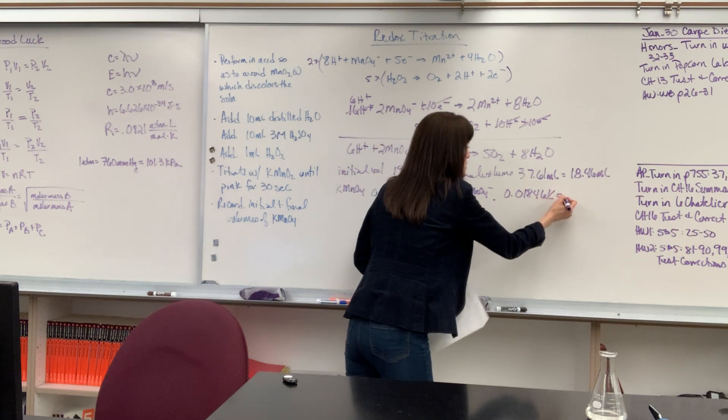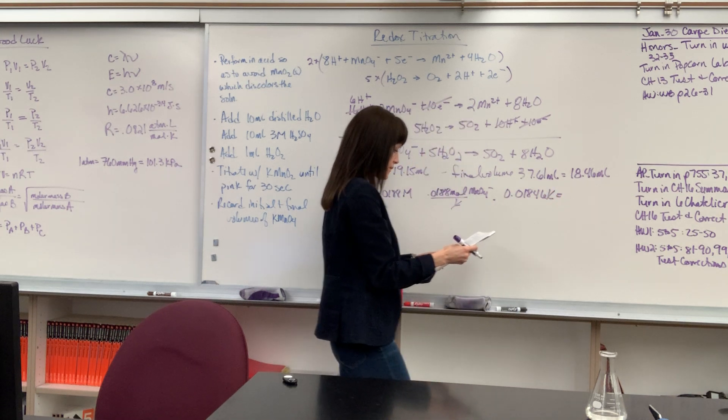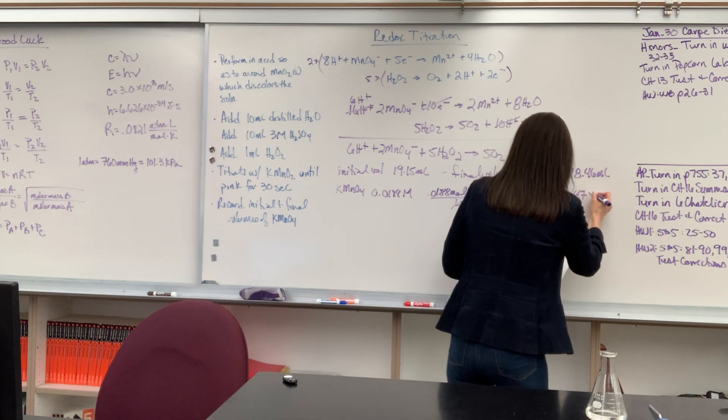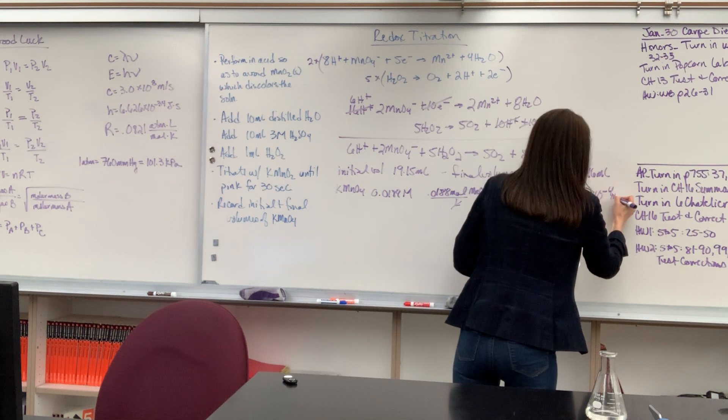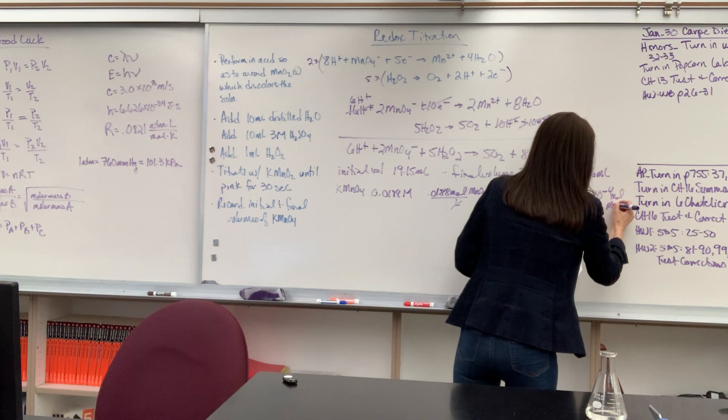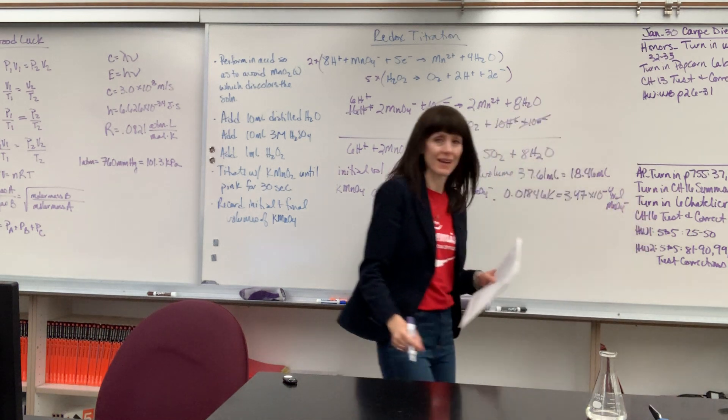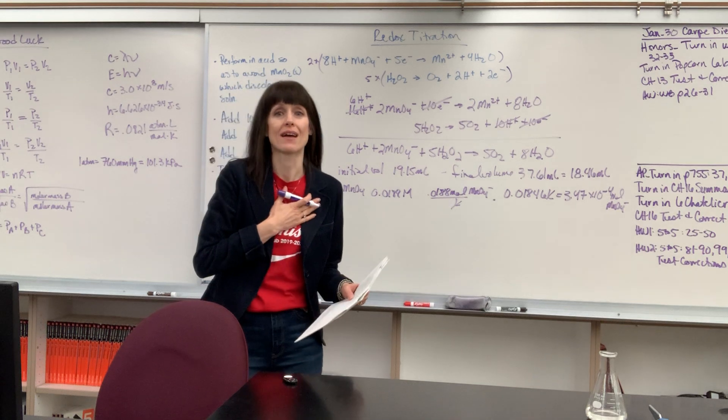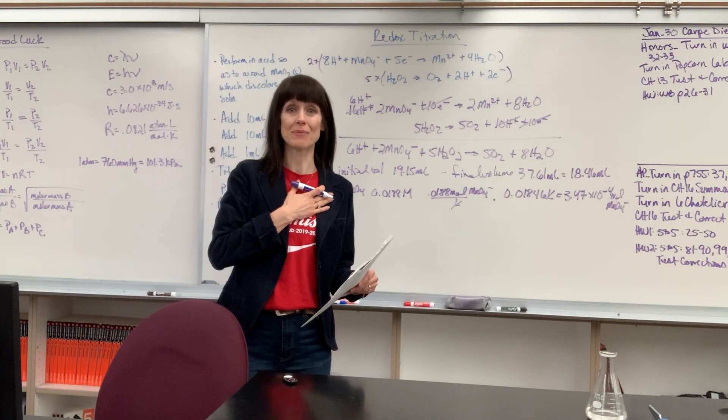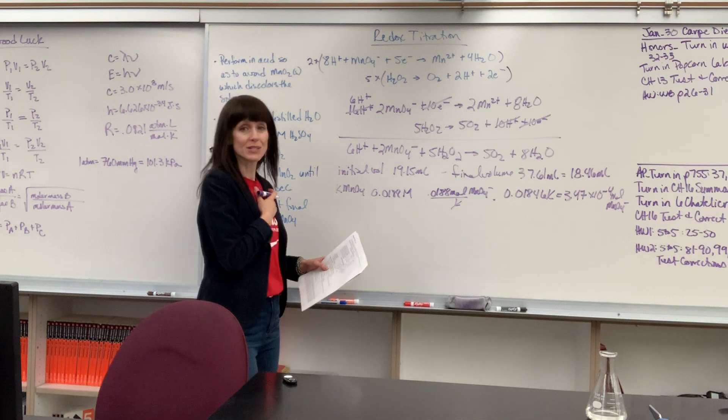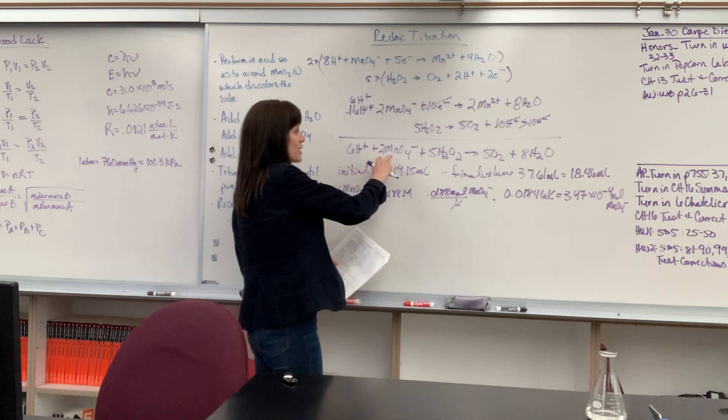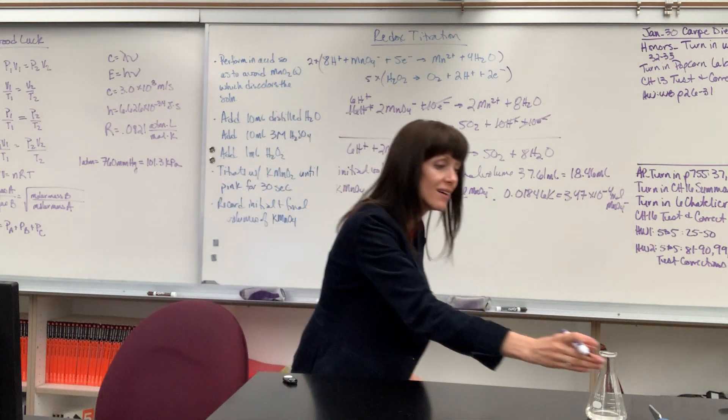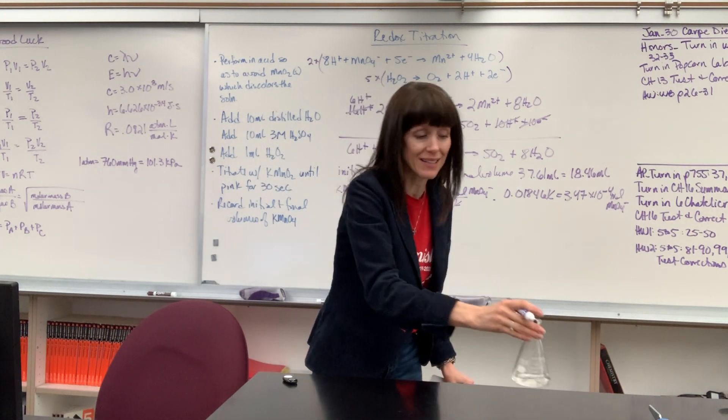Notice liters cancels, and that is going to give us 3.47 times 10 to the minus 4 moles of our permanganate ion. So that's how many moles we added. Now I'm driving at hydrogen peroxide. I want to know the amount of hydrogen peroxide. So we're going to do just a little bit of stoichiometry. If I know the moles of the permanganate, let's figure out how many moles of hydrogen peroxide we had in here.